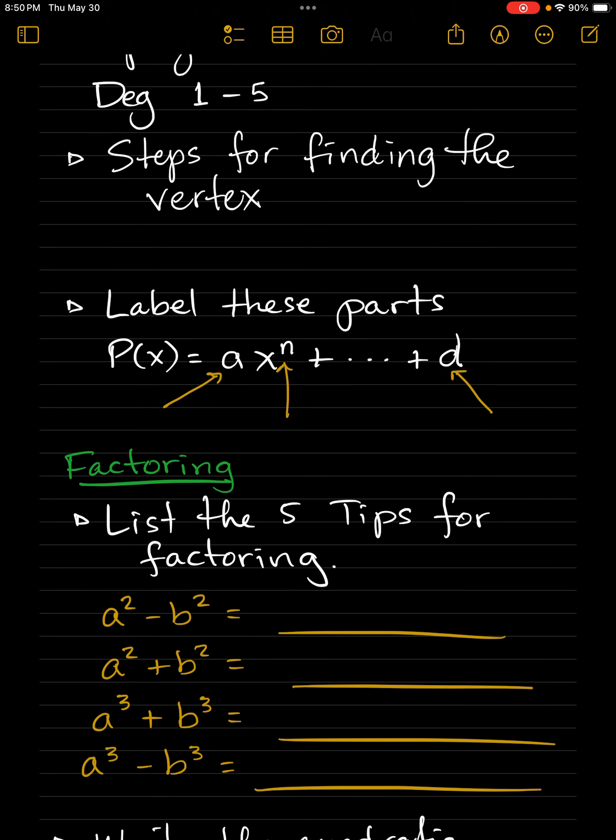Label these parts of a generic polynomial, and I'll give you a hint. D is the constant term.